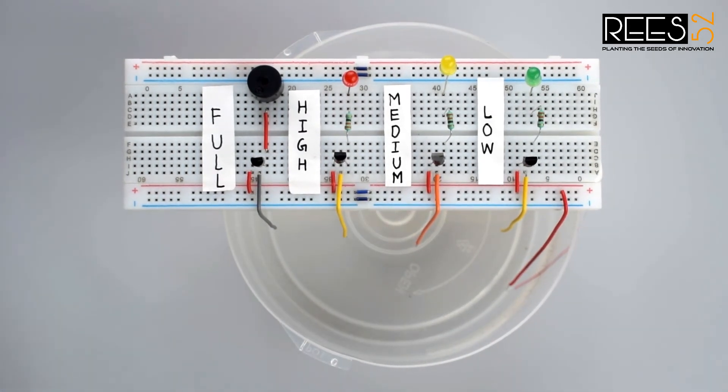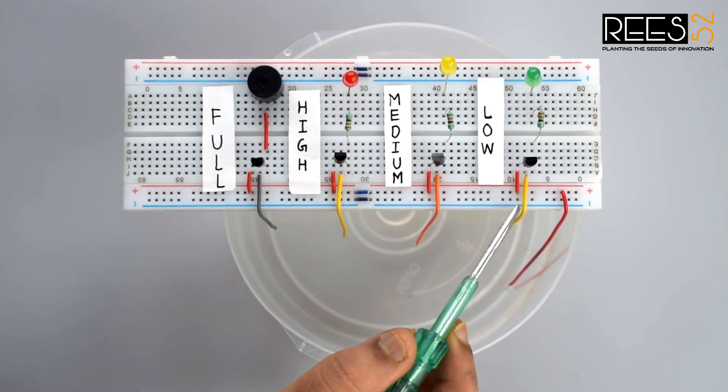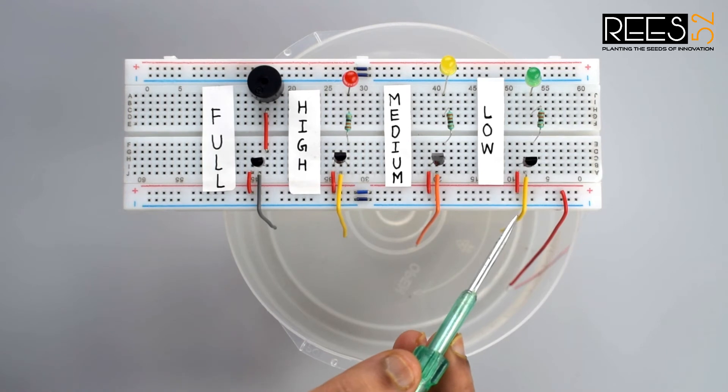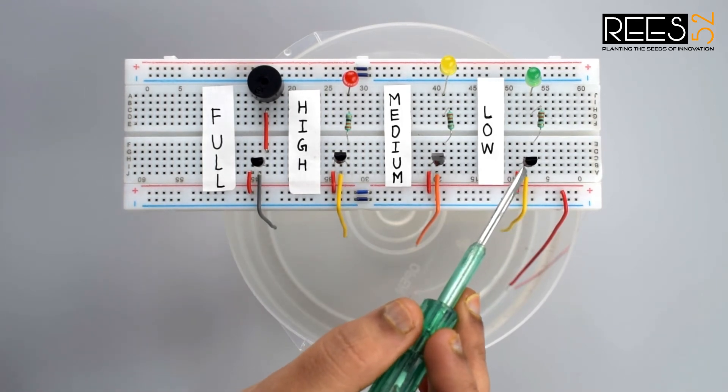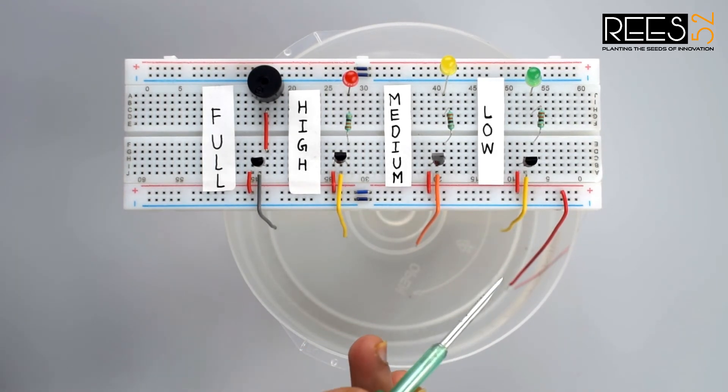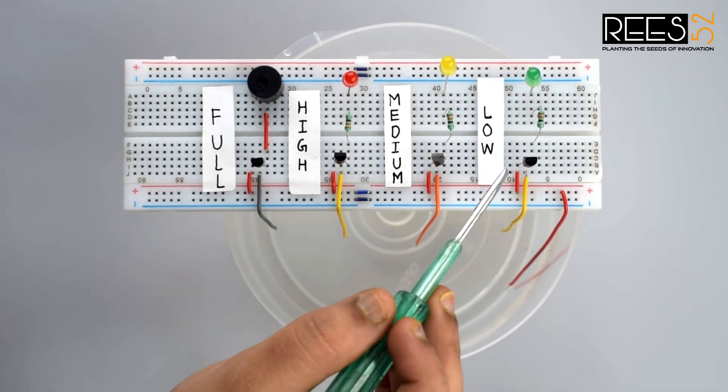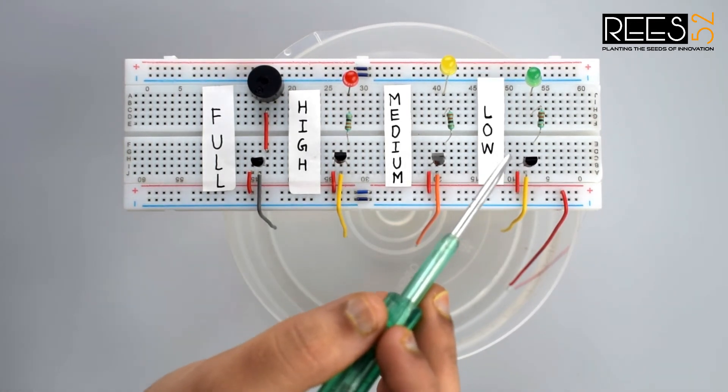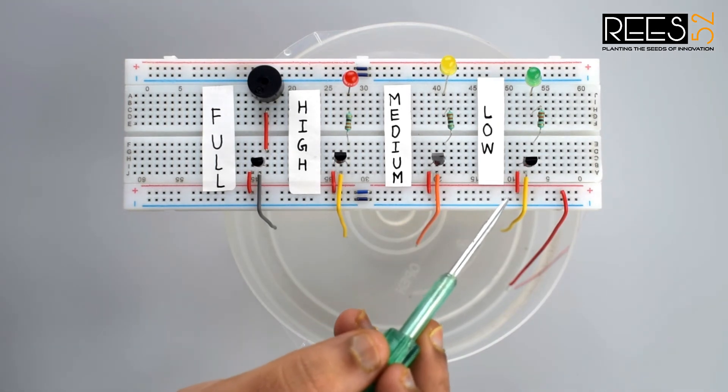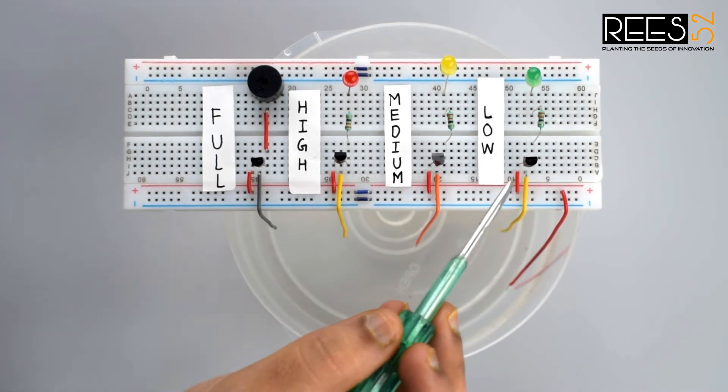When the water level reaches to point A in the tank, the positive side of the battery gets connected to the base of the transistor Q1 through the water. So when a positive voltage has been applied to the base of the transistor Q1, it gets into on state and current start flowing from collector to emitter and the green LEDs glow.